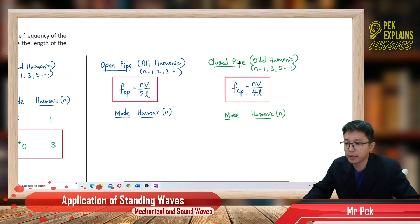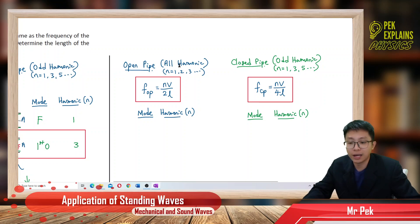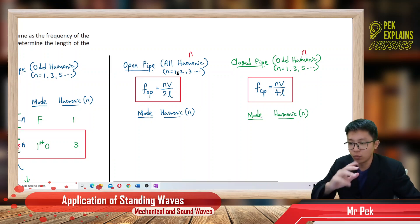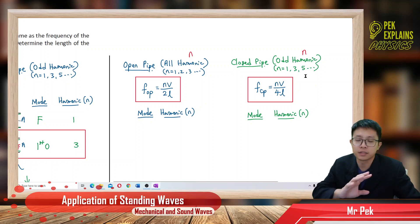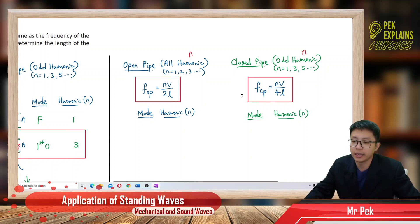An open pipe is all-harmonic, meaning it has all integers of n — starting from one, then two, three, and so on. A closed pipe is odd-harmonic, meaning it starts with one then goes to three, five — only odd numbers, no even numbers. The general formula for frequency of an open pipe is nv over 2L, and for a closed pipe the odd-harmonic general formula is nv over 4L.